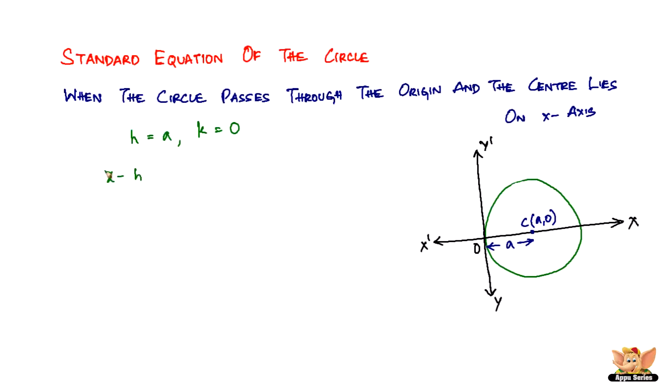So the standard equation is like this: x minus h, the whole square, plus y minus k, the whole square, equal to A square. h becomes A, so it will become x minus A, the whole square, plus k becomes 0, so it will become y minus 0, the whole square, which will be equal to A square.